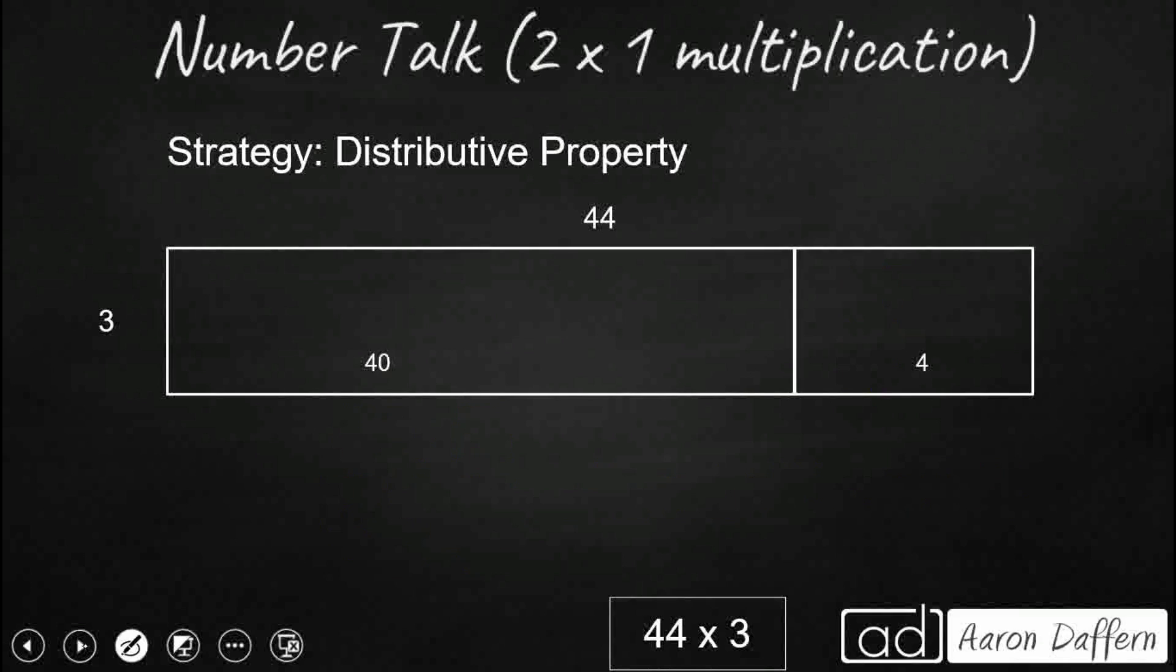Many like to use this form of the distributive property. What we want to do here is break apart our 44, our larger factor, but by place value. So we take our 44 and think it's really 40 plus 4, breaking it apart by place value.